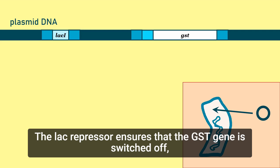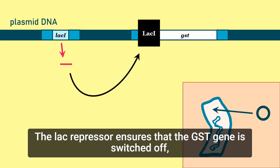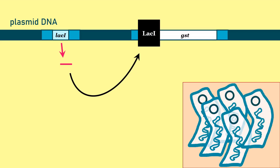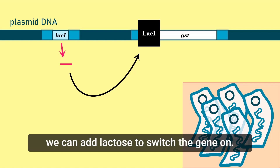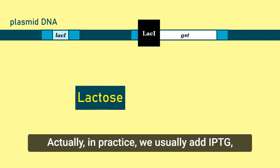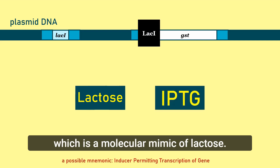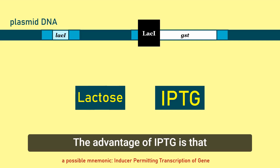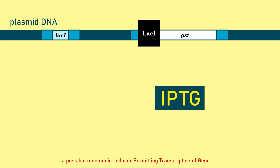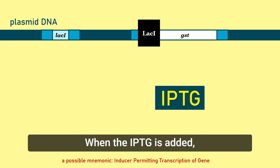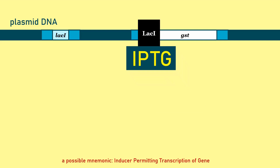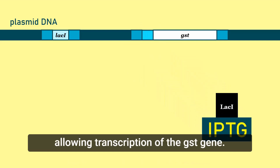The lac repressor ensures that the GST gene is switched off, so the bacteria will multiply as normal. When we have enough bacteria, we can add lactose to switch the gene on. Actually, in practice, we usually add IPTG, which is a molecular mimic of lactose. The advantage of IPTG is that it doesn't get metabolised by the E. coli. When the IPTG is added, it binds to the lac repressor protein, allowing transcription of the GST gene.